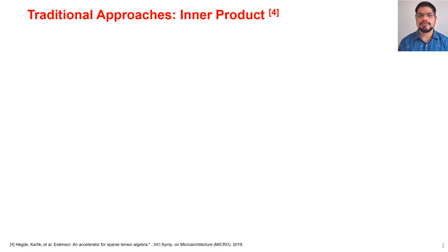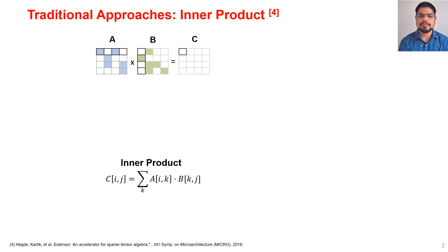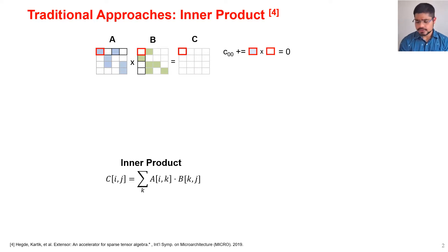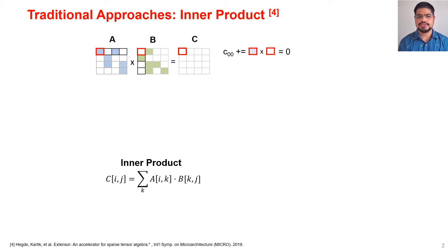There are two common approaches for performing sparse matrix multiply. The first is the inner product approach, where we perform an inner product of a row of matrix A and a column of matrix B to produce a single output element of matrix C. Since these are sparse matrices, this requires index matching. In the first cycle, we read the non-zero from whichever of A or B has the smaller index — in this case from A — and since there is a corresponding zero in matrix B, we do not perform any math.